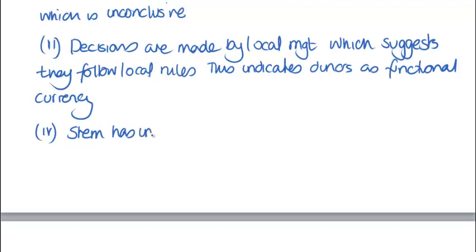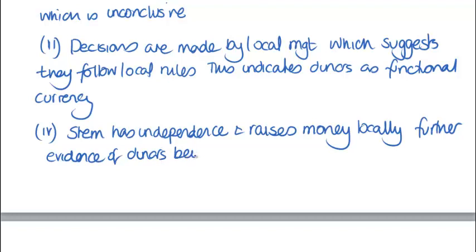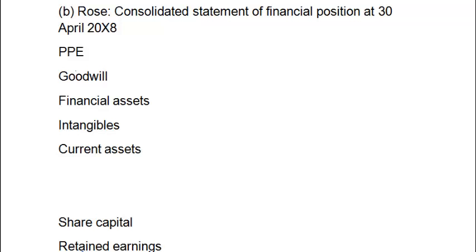We've also got the fact that STEM is borrowing money from local banks. Putting all these things together, whilst the evidence is not conclusive, the weight of evidence supports using the DINAR as the functional currency. To summarize what we've done here, we've effectively got seven or eight points laid out. I've tried to use my two-line rule and keep one idea per point in order to make it easier to mark.